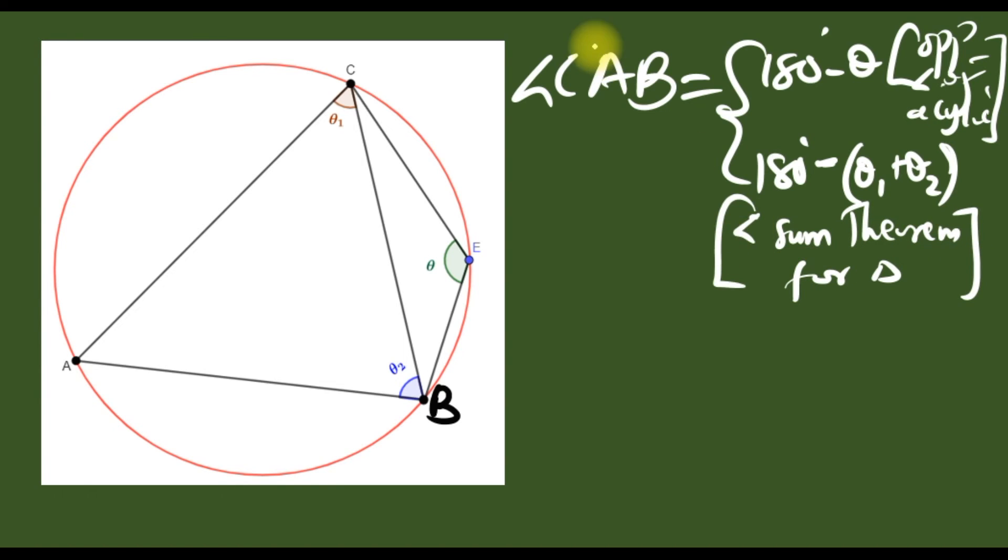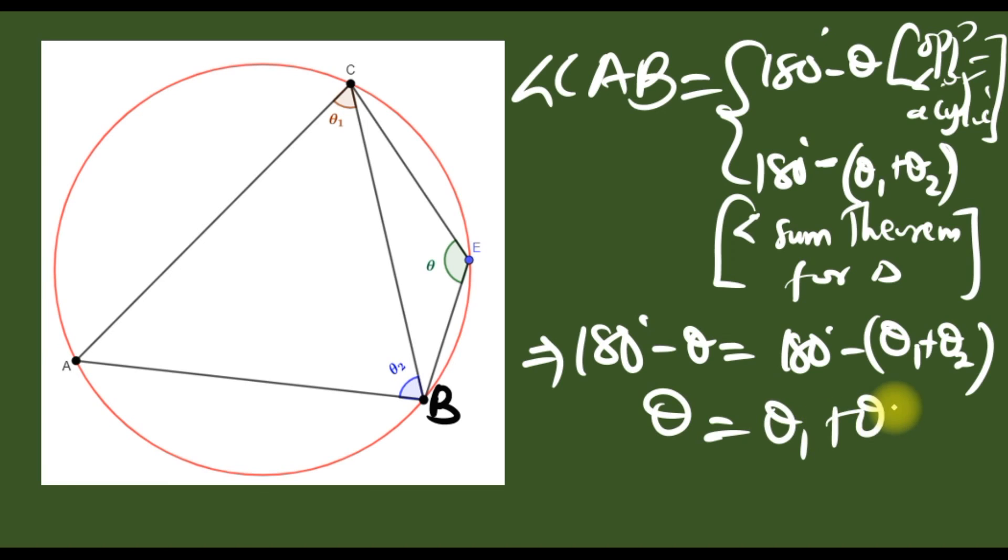So since this angle is that and that same angle is that, it implies that 180 minus theta is the same as 180 minus theta one plus theta two. As you can see, 180 cancels with 180 and minus with minus, so theta equals theta one plus theta two.